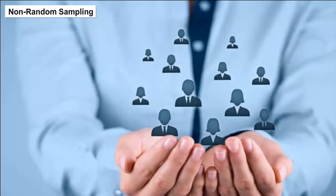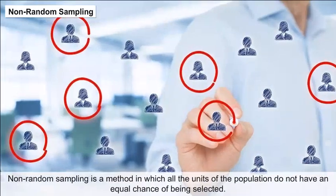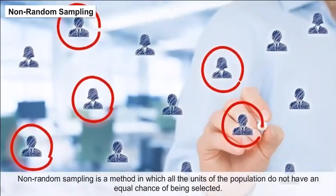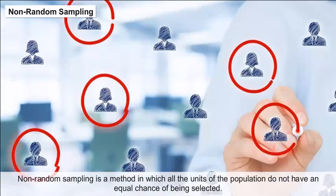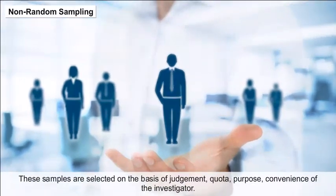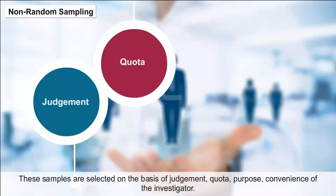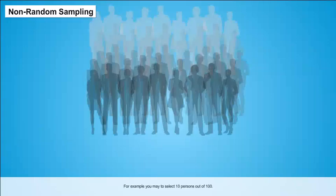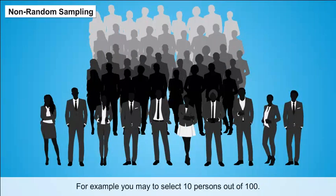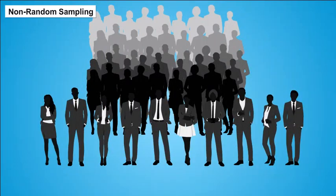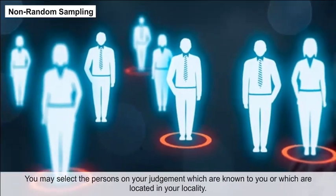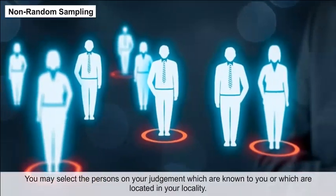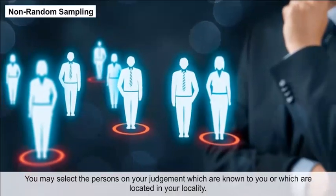Non-random sampling is a method in which all units of the population do not have an equal chance of being selected. These samples are selected on the basis of judgment, quota, purpose, or convenience of the investigator. For example, if you want to select 10 persons out of 100, you may select persons based on your judgment — those known to you or located in your locality.